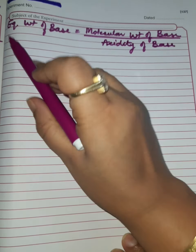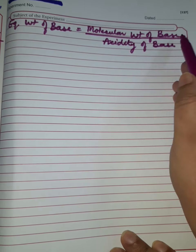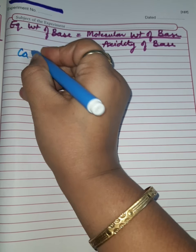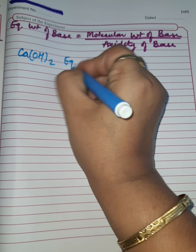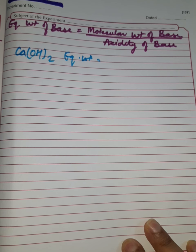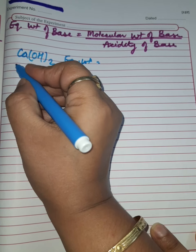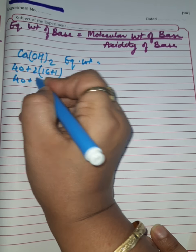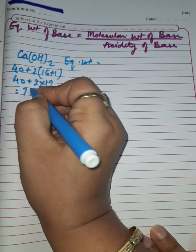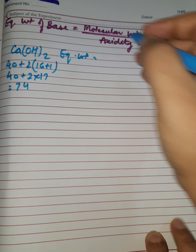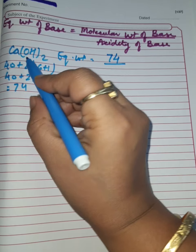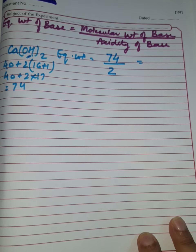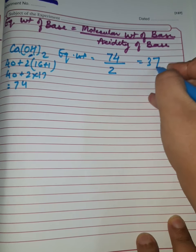Next is equivalent weight of a base. Equivalent weight of a base equals molecular weight of the base divided by the acidity of the base. For example, for calcium hydroxide Ca(OH)₂: molecular weight is 40 plus 2×(16+1), which is 40 plus 2×17, equaling 74. Acidity of a base is the number of replaceable hydroxide ions, which is 2 here. So equivalent mass equals 74 divided by 2, which is 37.